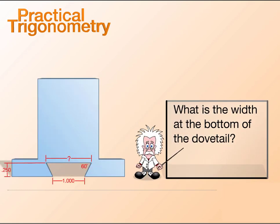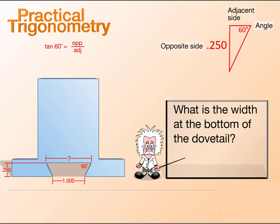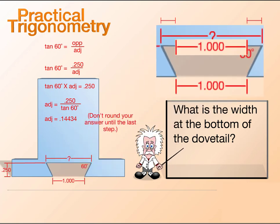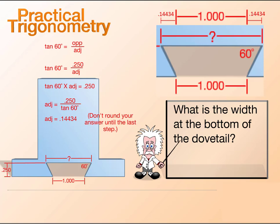What is the width at the bottom of the dovetail? Watch as we solve for the adjacent side. Remember to add it to both sides of the 1 inch length as shown. So, the total width is 1.289 inches.